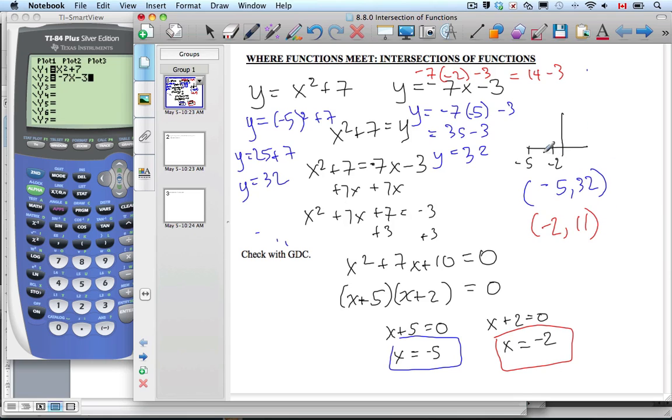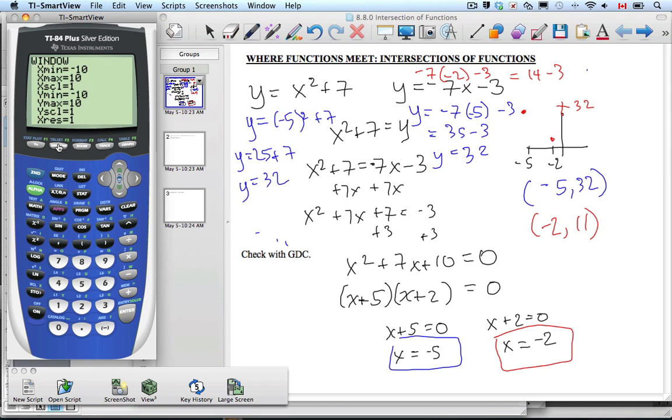All right. So we now need to think about this because negative 5, 32 is way up here. And negative 2, 11 is going to be down here. So we need to make sure that our window at least goes up to 32 so we can see that point. So let's go over to our calculator then, and I'll change our window. We already know that x values are okay because of minus 10 to 10, but it's the y values that we have to consider more carefully. Let's just go negative 1, and let's go up to 40, and let's use 4 there.